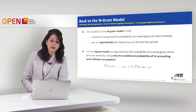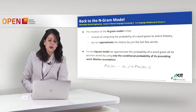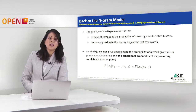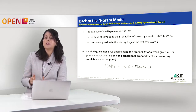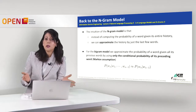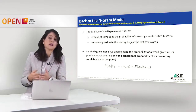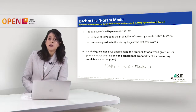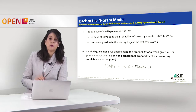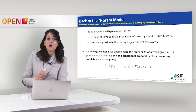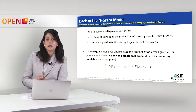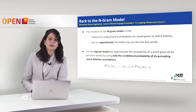Let's go back to the n-gram models. The intuition of the n-gram model is that instead of computing the probability of a word given its entire history — which might mean the entire text or even the entire corpus — we can approximate the history by just the last few words. More specifically, for the bigram model this means we approximate the probability of a word given all its previous words by using only the conditional probability of its preceding word, which is known as the Markov assumption.